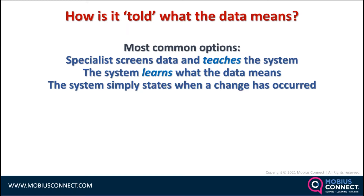Another way is that the system itself learns what the data means. In our maintenance world, the system might be watching vibration data and other parameters, then watches your computerized maintenance management system and says, 'Oh, they're generating a work order to replace the bearing or balance the machine.' It therefore works out that the change in data it saw must mean the bearing needs to be changed. Systems like that are working right now — we just have to hope people put the right information into the CMMS, otherwise it learns the wrong thing.